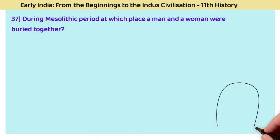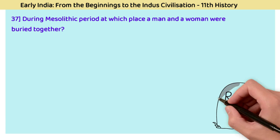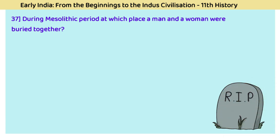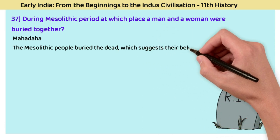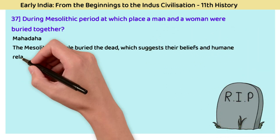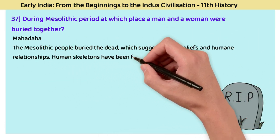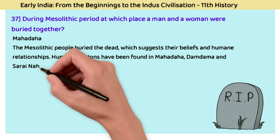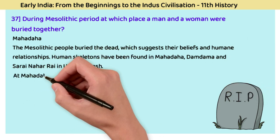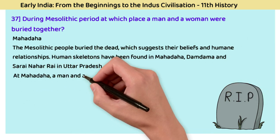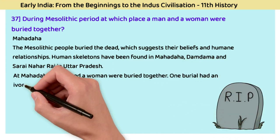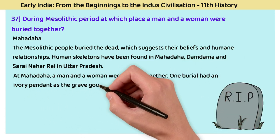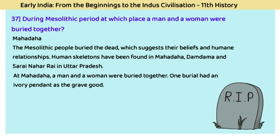Question 37: During the Mesolithic period, at which place were a man and woman buried together? The answer is Mahadaha. Mesolithic people buried the dead, suggesting their beliefs and human relationships. Human skeletons have been found at Mahadaha, Damdama, and Sarai Nahar Rai in Uttar Pradesh. At Mahadaha, a man and woman were buried together; one burial had an ivory pendant as the grave good.